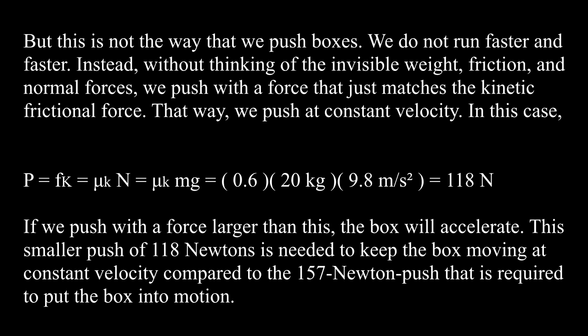But this is not the way that we push boxes. We do not run faster and faster. Instead, without thinking of the invisible weight, friction, and normal forces, we push with a force that just matches the kinetic frictional force. That way we push at constant velocity. In this case, push P equals frictional force fk, which is mu k N or mu k mg, and we get 118 newtons. This smaller push of 118 newtons is needed to keep the box moving at constant velocity, compared to the 157 newton push required to put the box into motion.